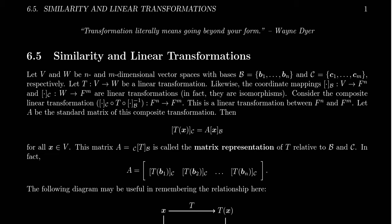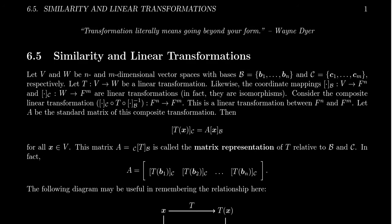Welcome back to our lecture series based upon the textbook Linear Algebra Done Openly. I am your professor, Dr. Andrew Misseldine. We are in section 6.5 entitled Similarity and Linear Transformations, which at the time of this recording is the final section of our textbook. By the open nature of the textbook, it's meant to expand, so there may be more sections in the future. In this final section, I want to make one more connection between linear transformations and the idea of similarity developed in chapter 6 with regard to eigenvalues and eigenvectors.